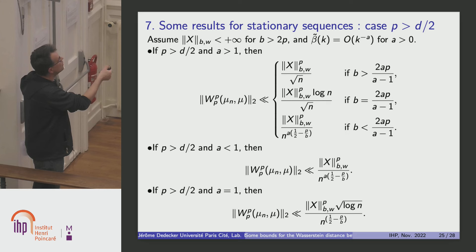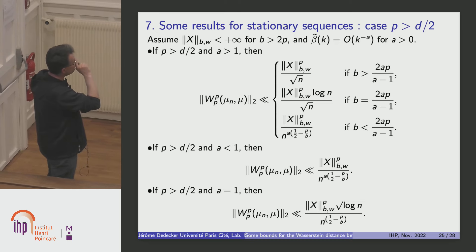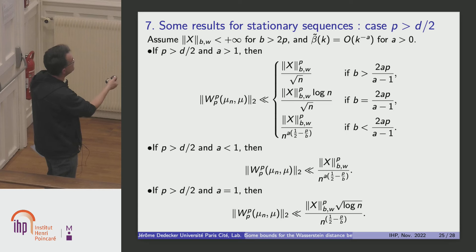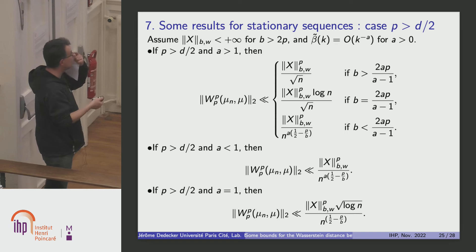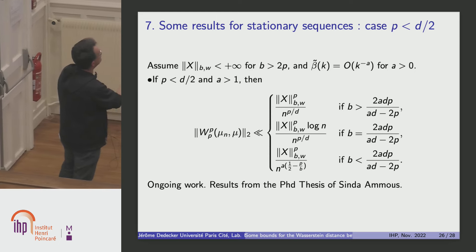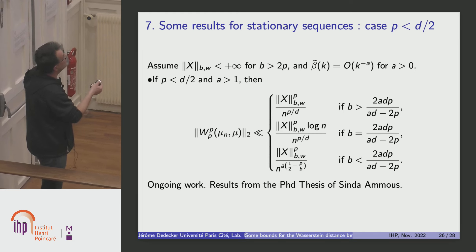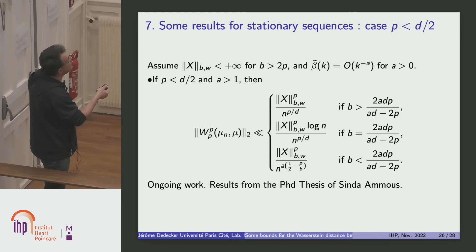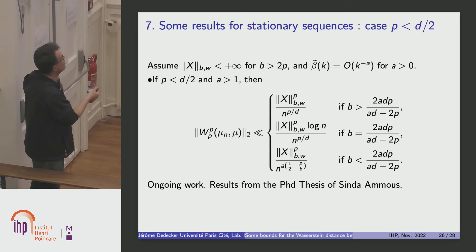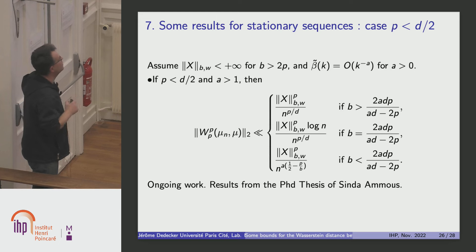We can expect to obtain the same kind of results as before. But if A is less than 1, the rates are not so good, and in the intermediate case you get an extra logarithmic term. I have another slide for the large dimensional case, and I put the result only for A greater than 1 — the short memory case. Again, you find the good rate of convergence provided you have enough moments. This is part of the PhD thesis of my student Cinda Amous, and this question is not completely resolved yet.